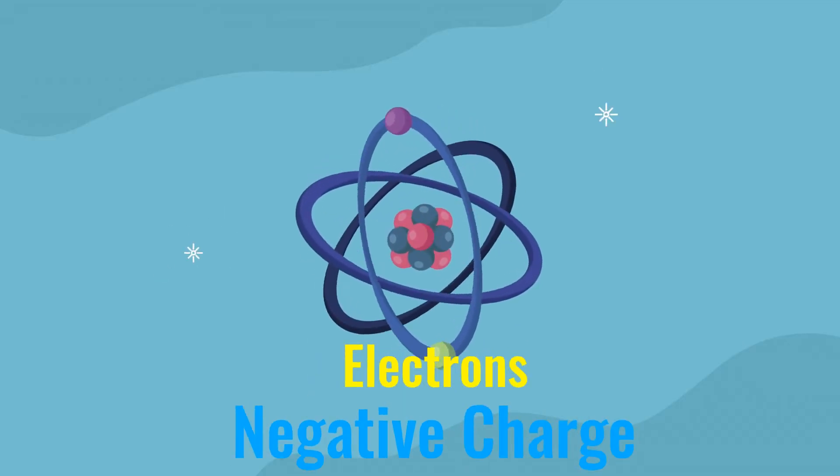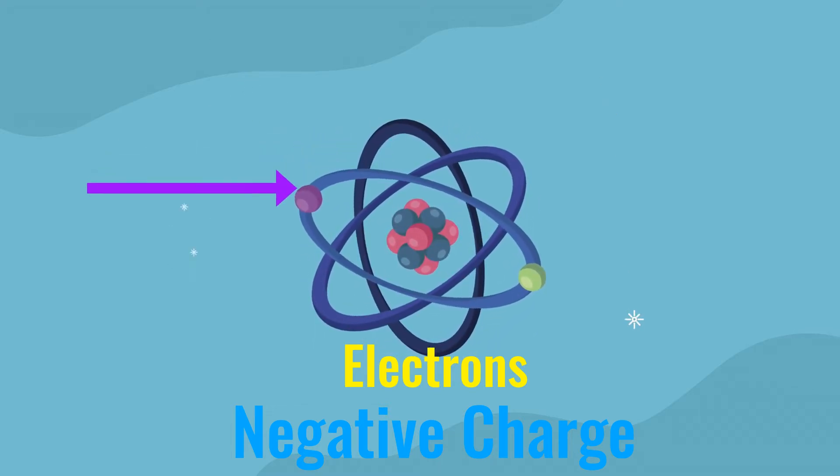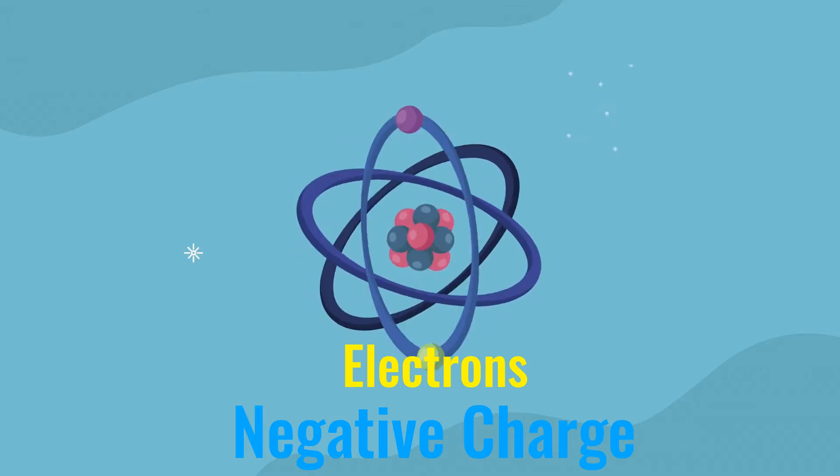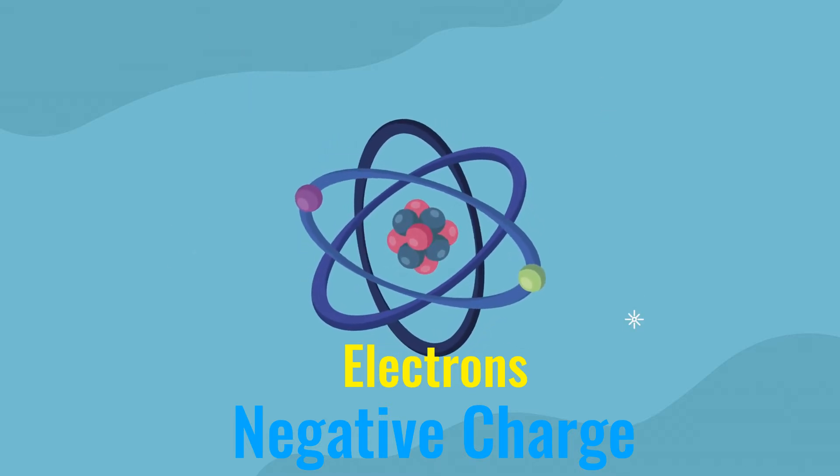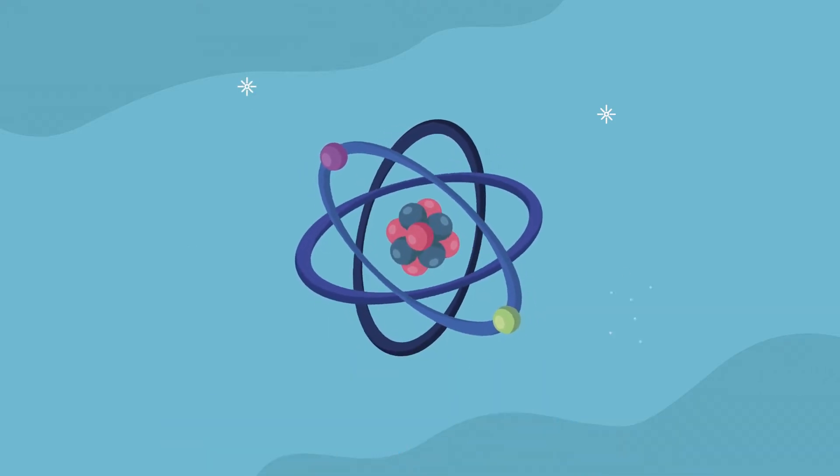Electrons are even smaller than protons — they're teensy-tiny. They have a negative charge, and their negative charge is exactly equal to the positive charge of the protons, so they balance each other out. An electron has a negative charge of one, and they do have a mass, but barely — they're so tiny that they barely have a registrable mass. For a long time we thought they didn't have mass, but then we realized they did. Think of protons: P-R-O-T-O-N, P, and positive starts with P. So protons have a positive charge. Electrons have a negative charge.